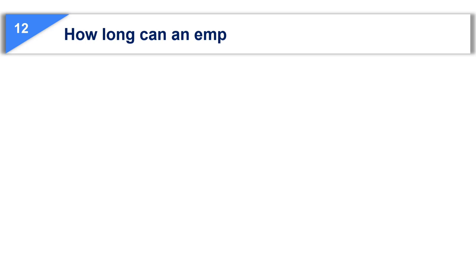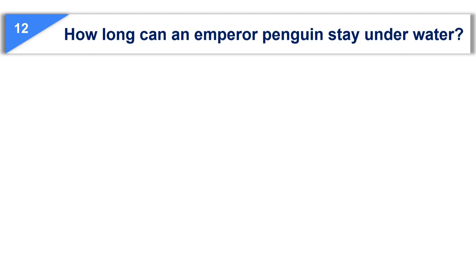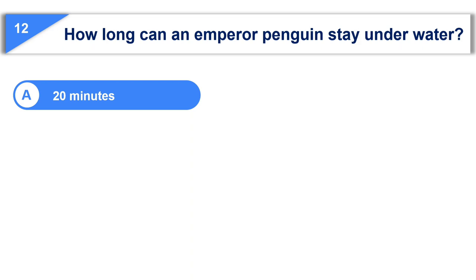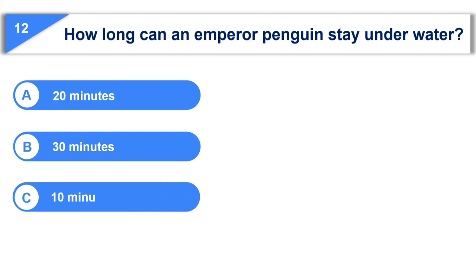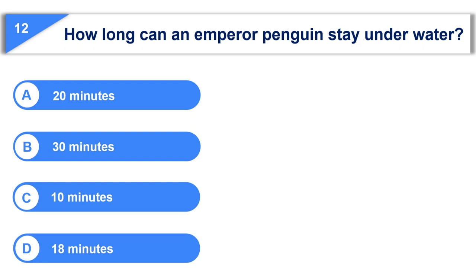Now let us see the twelfth question. How long can an emperor penguin stay under water? Option A, 20 minutes. Option B, 30 minutes. Option C, 10 minutes. Option D, 18 minutes.